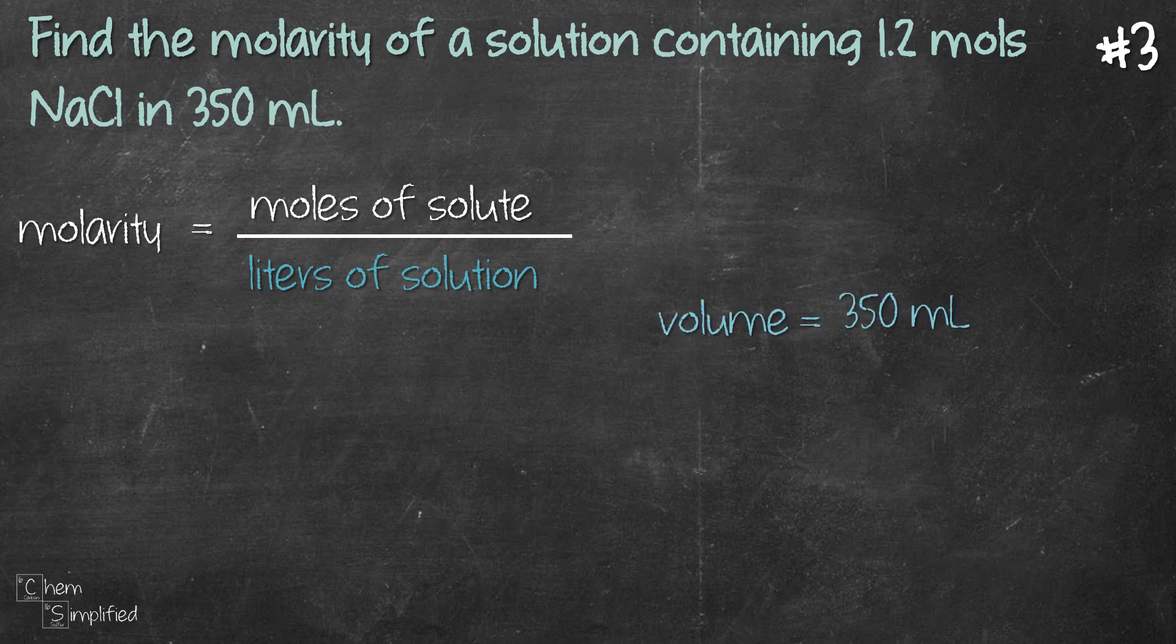Starting with 350 ml, we multiply with the conversion unit. So, 1 ml is 10 to the negative 3 liter. The ml cancel each other off, and that gives us 0.35 liter. Plug that at the bottom, 1.2 moles at the top, of course, and that gives us 3.4 molar.